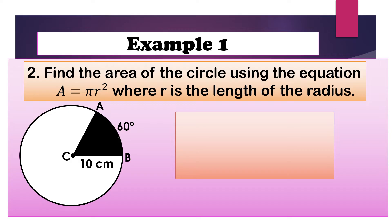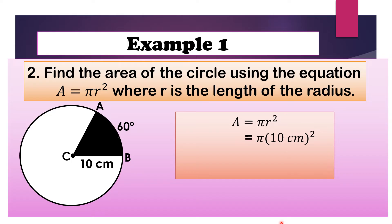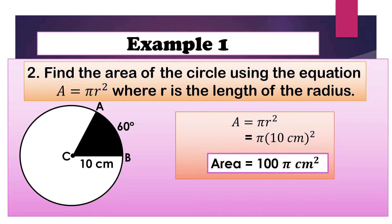Next step, find the area of the circle using the equation A equals pi R squared, where R is the length of the radius. The radius of circle C is 10 cm, so we substitute R with 10 cm. We have A equals pi times 10 cm squared. The square of 10 cm is 100 cm squared, so the area of the circle is 100 pi square cm.